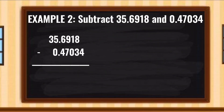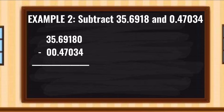Again, for subtraction — Step 1: arrange the digits in columns and align the decimal points. Step 2: insert zeros in empty decimal place values if needed so that all numbers have the same number of decimal places. Step 3: subtract as with whole numbers, and place the decimal point between the digits vertically aligned to all the given numbers.